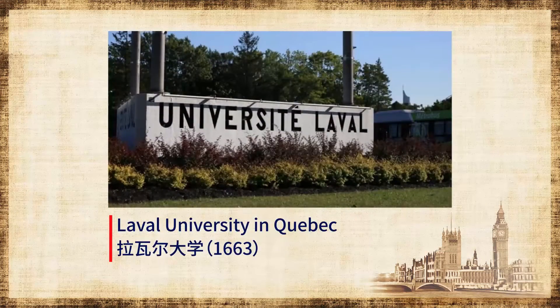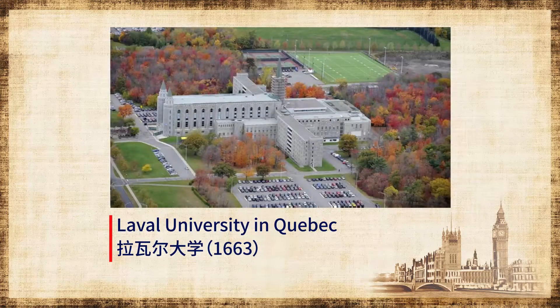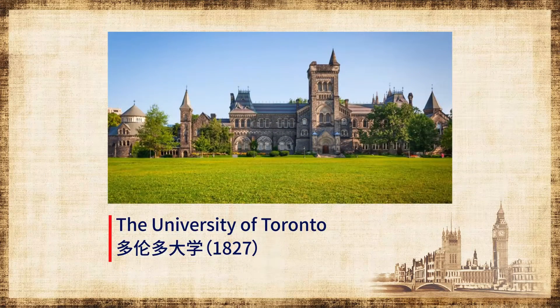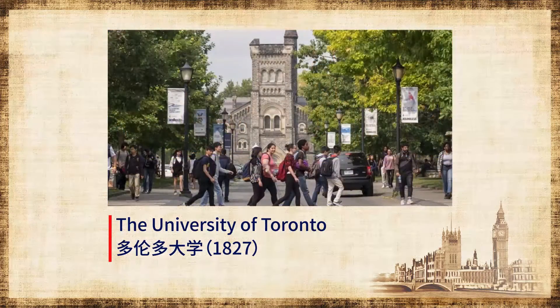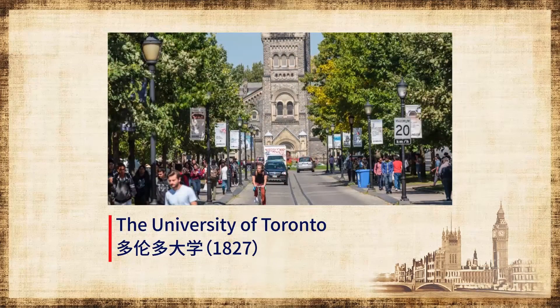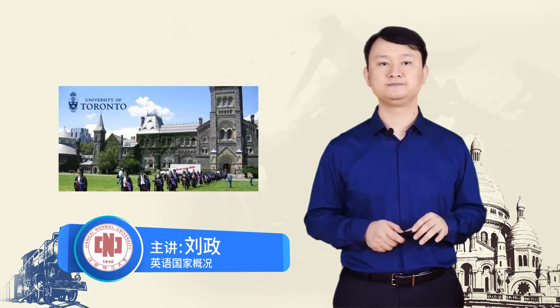Laval University, originally founded in 1663, is the oldest French-speaking university in Canada, with its main campus located in Quebec City. The University of Toronto, established in 1827, is now the largest university in the country. Four Prime Ministers, two Governors-General, and numerous internationally recognised academic and business leaders graduated from this institution. It also boasts the most Nobel Prize-winning graduates among all the universities in the country. Thank you very much, ladies and gentlemen.